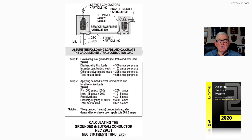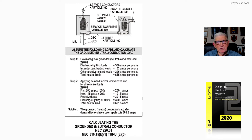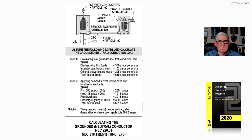To determine if you have a current carrying conductor as a neutral, go to 310.15(E). This becomes really important when you have a four-wire, three-phase system — 480/277 or 120/208. For example, if you had 100 amps on L1, L2, and L3, and 51 amps of that neutral current was harmonics or non-linear, the neutral is current carrying. But if you had 49 amps and no harmonics or linear loads, then the neutral is not current carrying. It's the 50% rule that you find there.